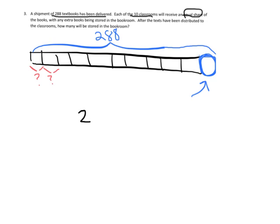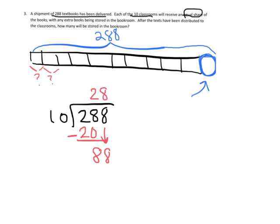So it means we're going to divide. We've got 288 divided by 10. So 10 goes into 28 two times, that's 20 with 8 left over. And then we can bring down the 8. 10 goes into 88 eight times, so there's our 80 and we have a remainder of 8 books left over.